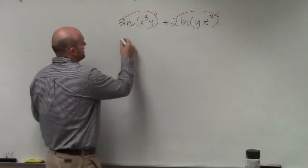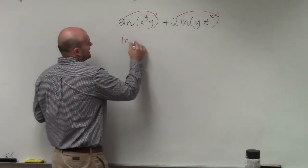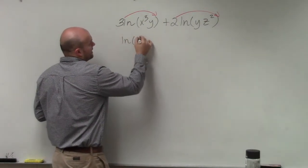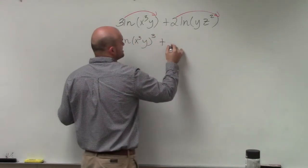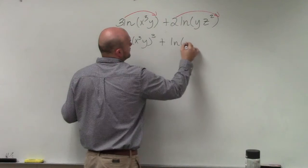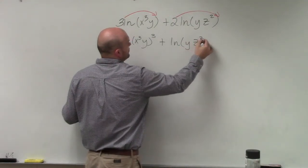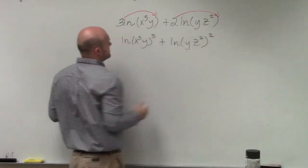So by doing that, I now have the ln of x cubed y raised to the third power plus ln of yz squared to the second power.